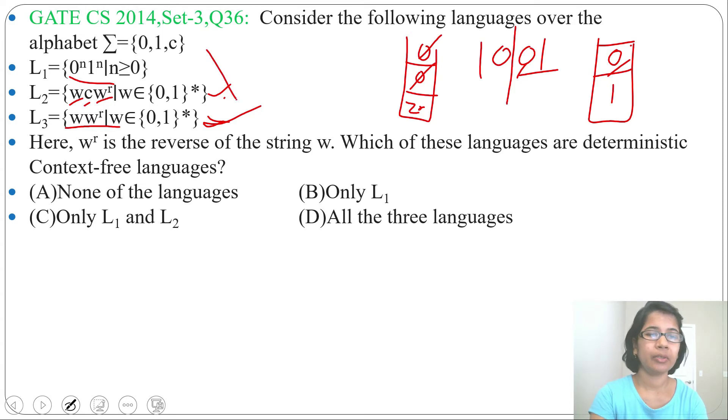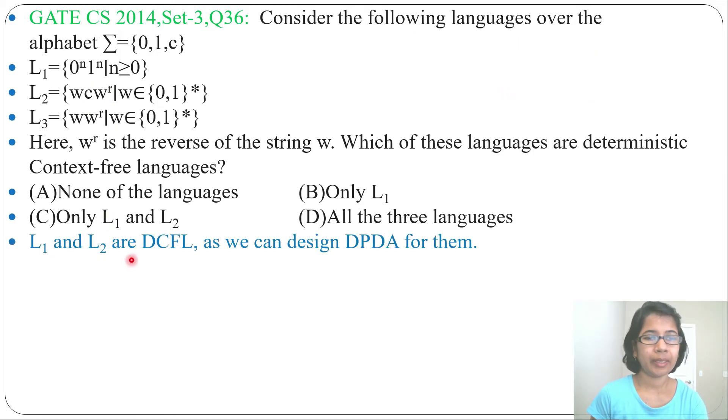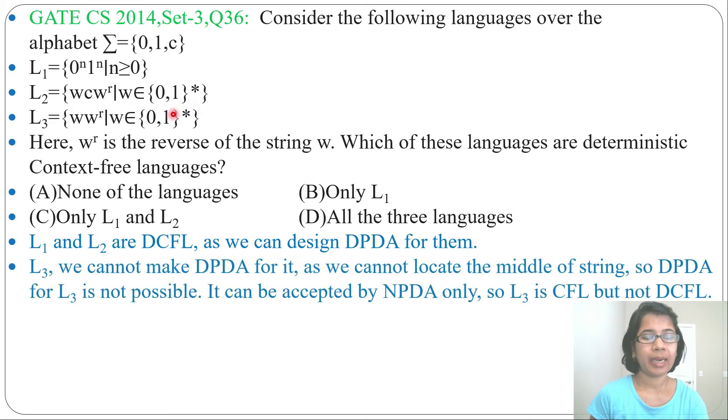So L1, L2 are DCFL and L3 is non-deterministic context-free language. L1 and L2 are DCFL as we can design DPDA for L1 and L2.